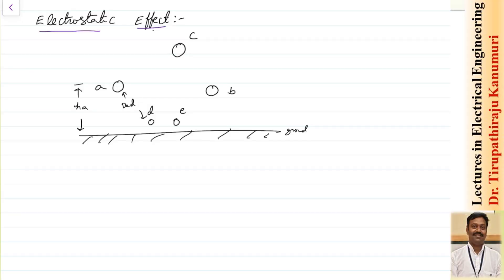Let us take for example: I am taking three power carrying conductors A, B and C which are kept in an equilateral triangle, and let us assume a transmission line or a communication line is passing nearby, represented by conductors D and E. The electrostatic effect of conductors A, B, C on these communication lines can be analyzed easily by taking the method of images.